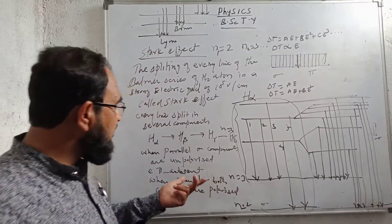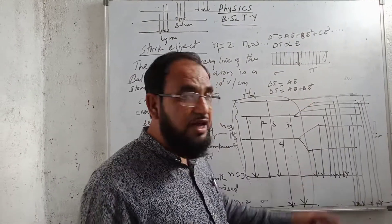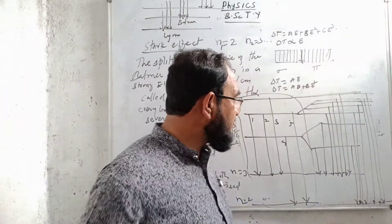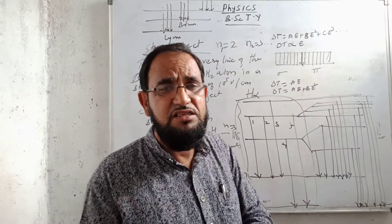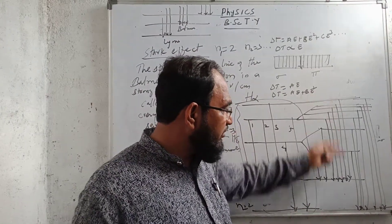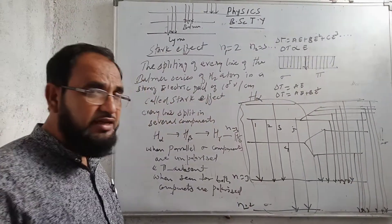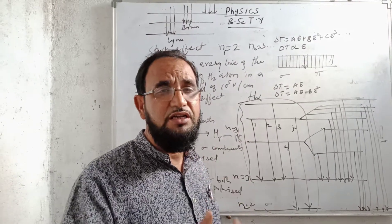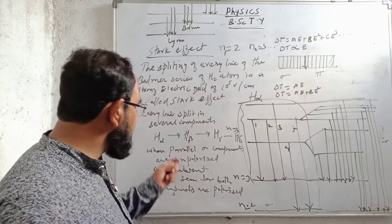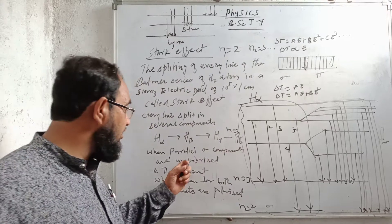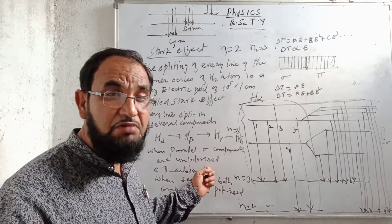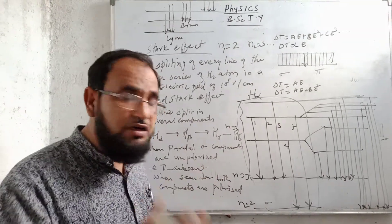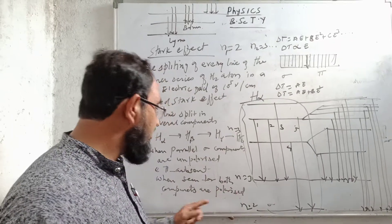Similarly, for the H-beta line, on both sides of the H-beta line there is a series of lines known as the sigma series and the pi series. The splitting of spectral lines continues on both sides from the different orbits of the hydrogen atom. When the spectrometer is parallel, the sigma components are unpolarized and the pi component is absent. When the spectrometer is perpendicular, both sigma and pi components become polarized.